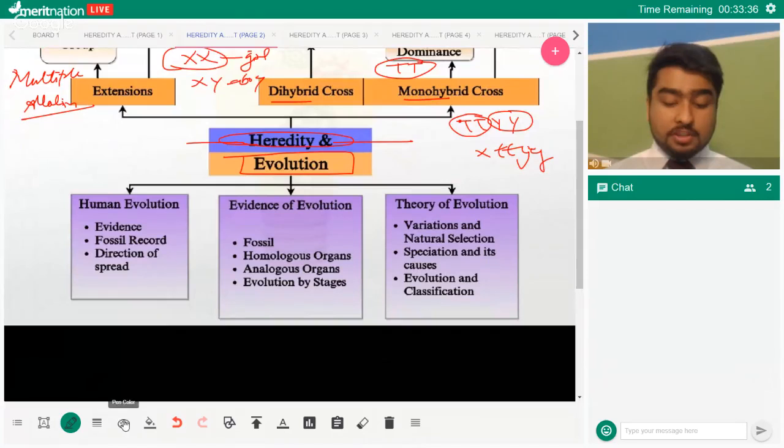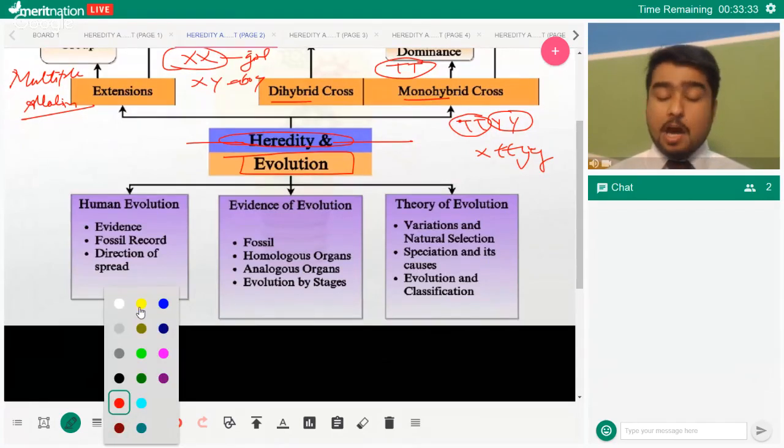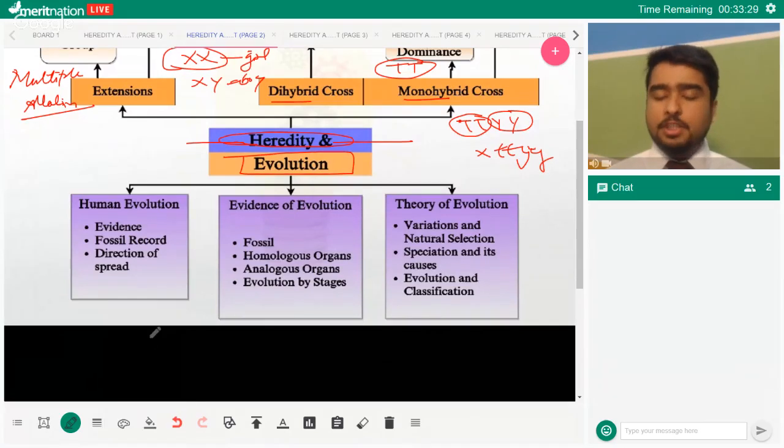Now evolution is where it becomes very tricky. First we try to understand the theory of evolution - that means how was the life created. In NCERT they are only given a brief history or brief understanding of the creation of life, that is chemical evolution. You have to know about the experiment that was performed by Miller and Urey. This might be asked in your exams.